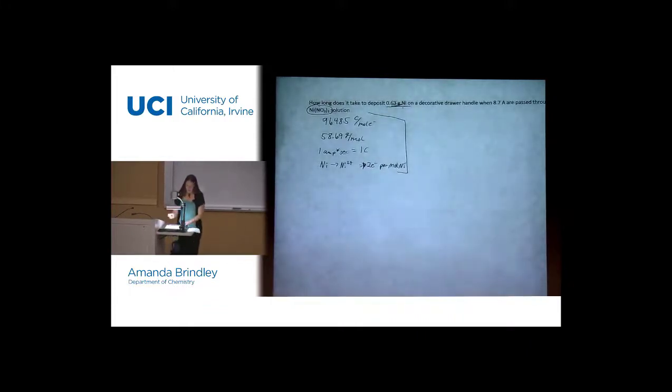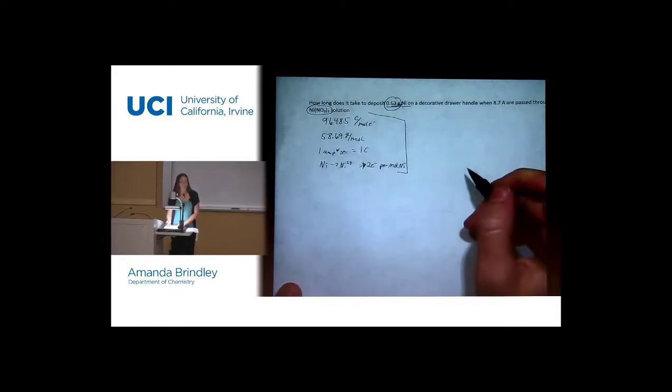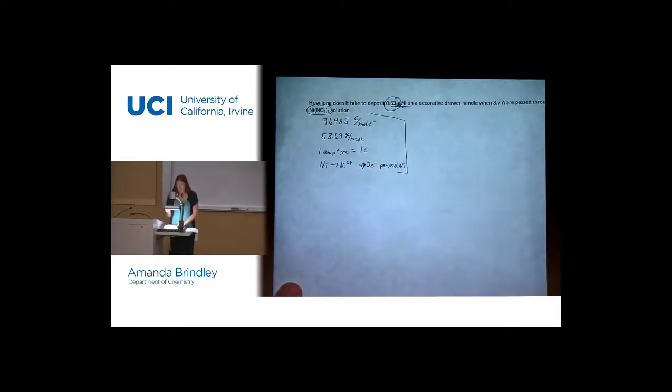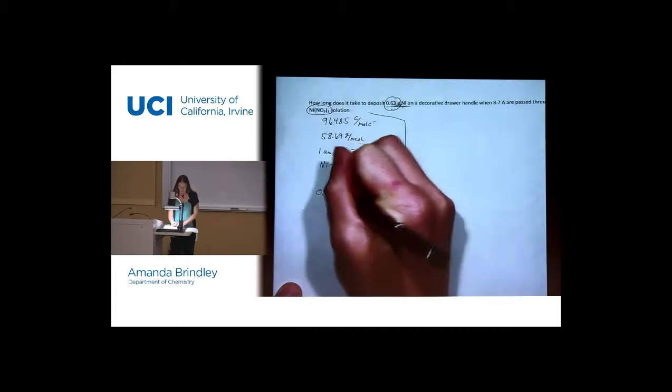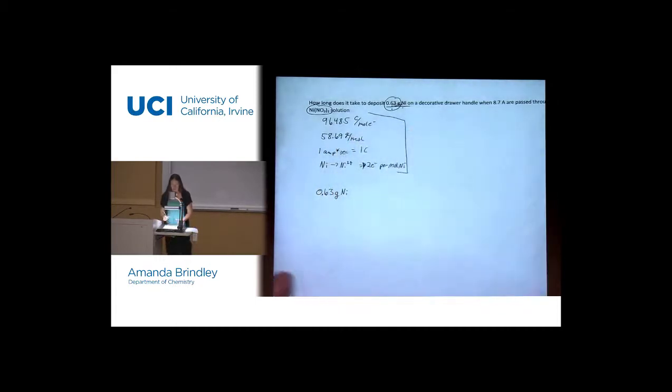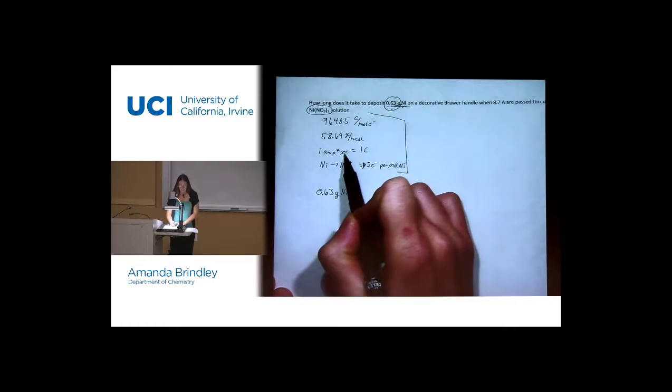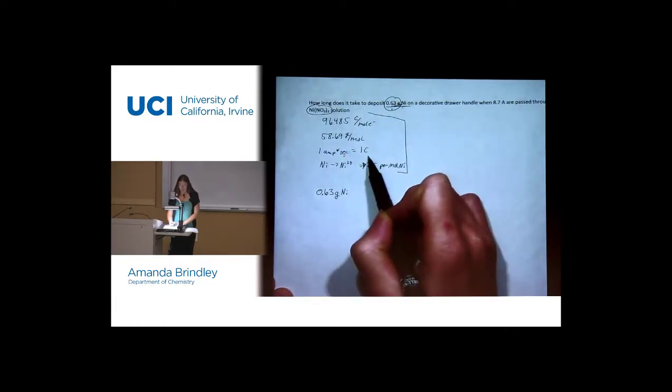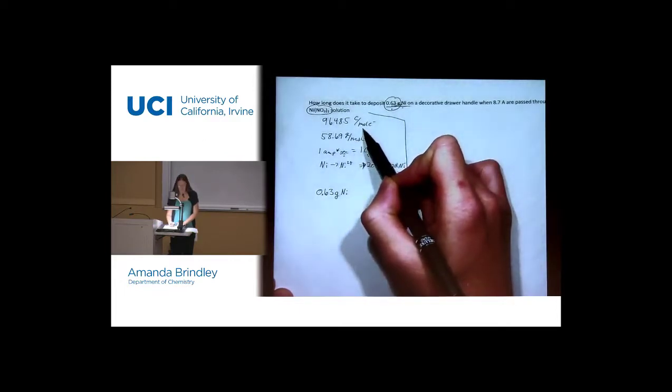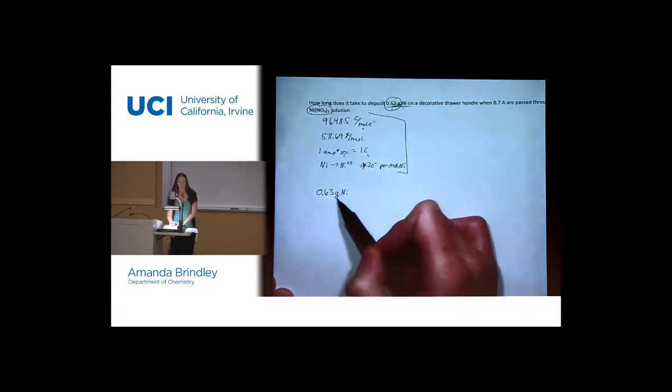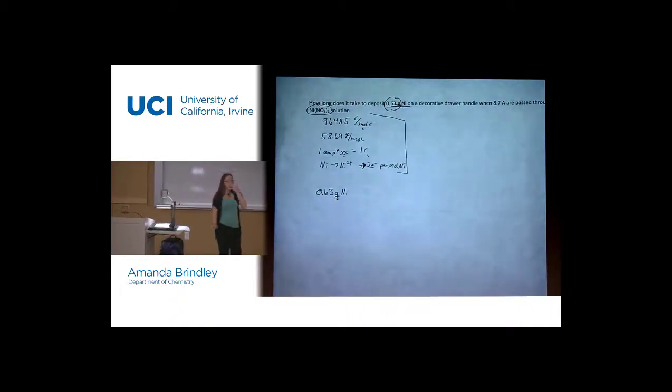Now we're going to try to go from grams to time. You may not know where to start, or you may not know how you're going to get there, I should say. But you do kind of know where to start. Start with your 0.63 grams. Start with your given. We know we're trying to get to time. You may not really know where you're going. We would like to get to seconds, but we can't get to seconds. So what if we could get to coulombs? Well, we're not to coulombs yet either, but what if we could get to moles of electrons? Well, we could almost get to moles of electrons if we had moles of what? Nickel, right? If we have moles of nickel, we can get to moles of electrons.